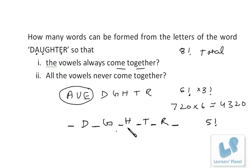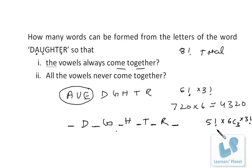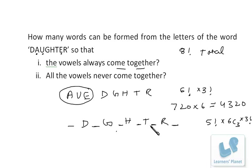We have six available gap positions but only three vowels. So I need to select three of these six places and place the vowels there. Selecting three places from six is done by 6C3. Once three places are selected, the three vowel letters can be arranged in those three places in 3 factorial ways. So the answer for Case 3 is 5! × 6C3 × 3!.